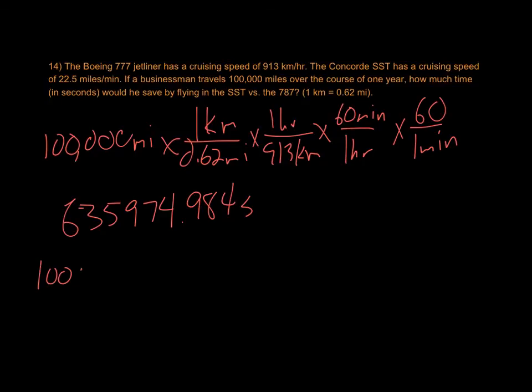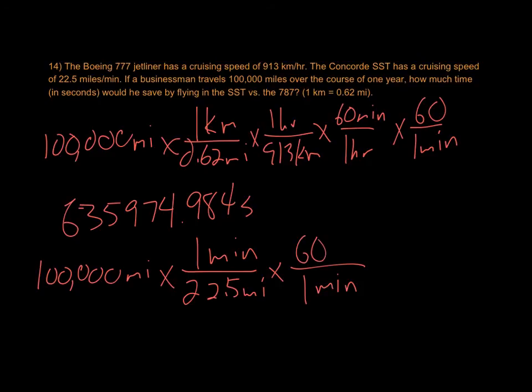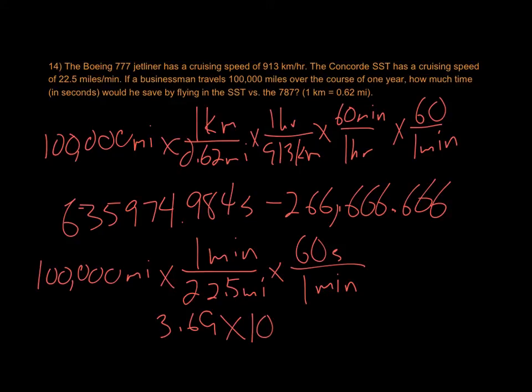And then the second one, 100,000 miles again, same distance, but this time, it says we go 22.5 miles in one minute. We don't have as many steps here, because we're already in miles, and we're going from minutes to seconds instead of hours to seconds. One minute, 60 seconds. When we do that, we get an answer of 266,666.66 repeating. We find the difference between those, and we end up with 3.69 times 10 to the fifth seconds. That's how much time we would save between the two.